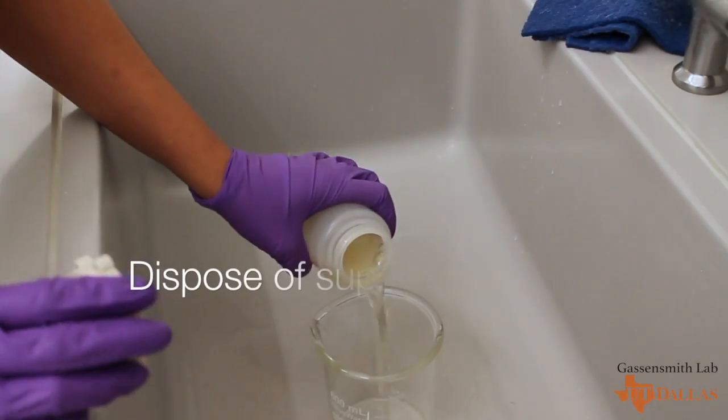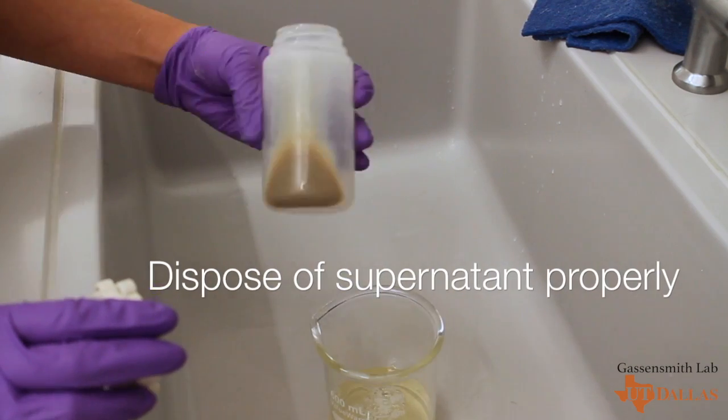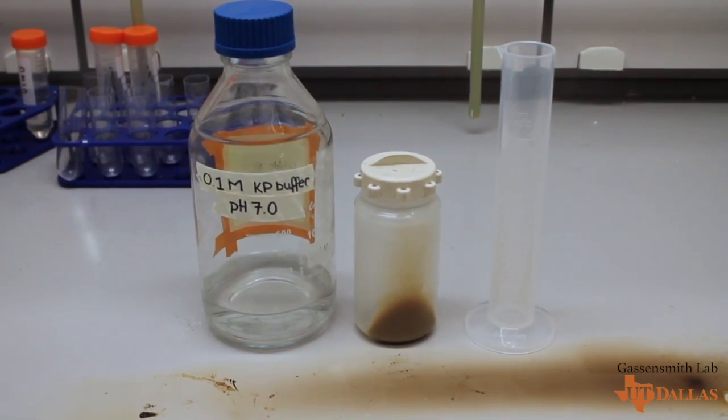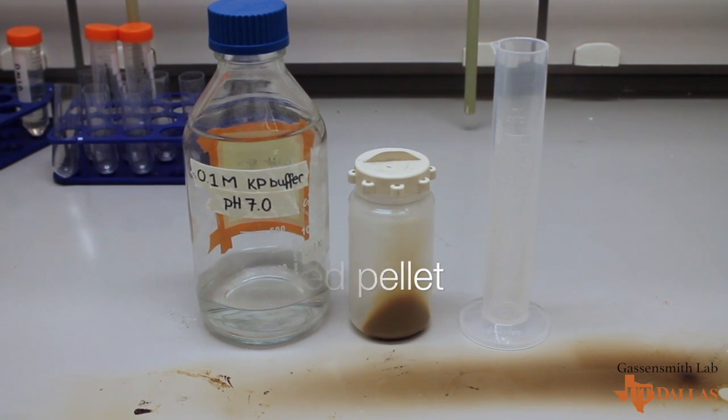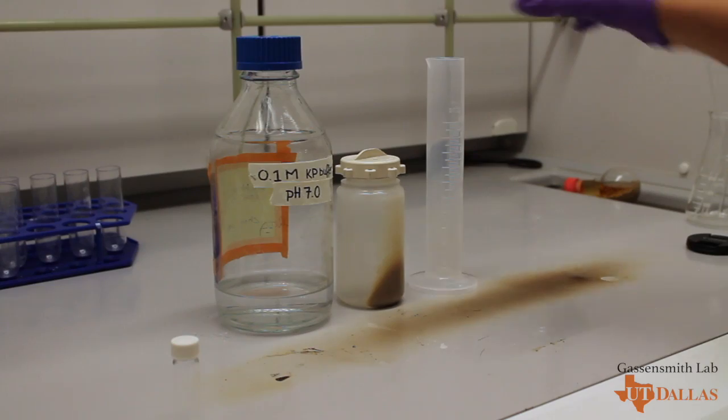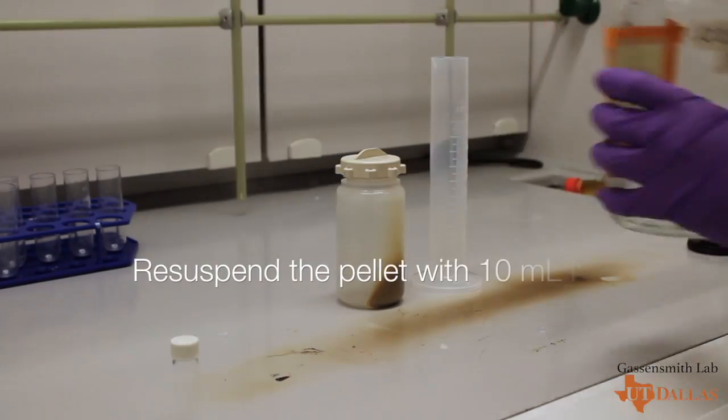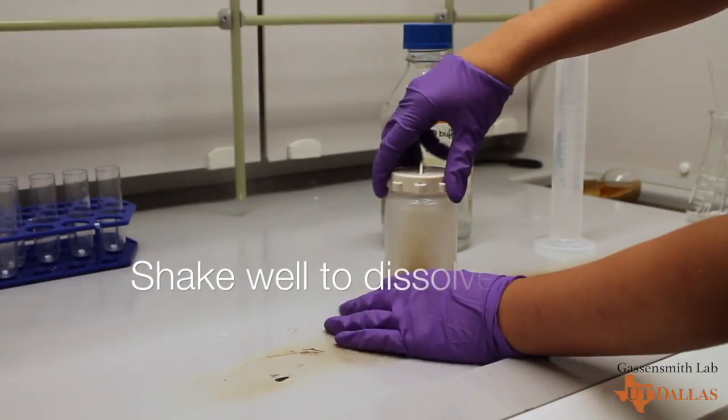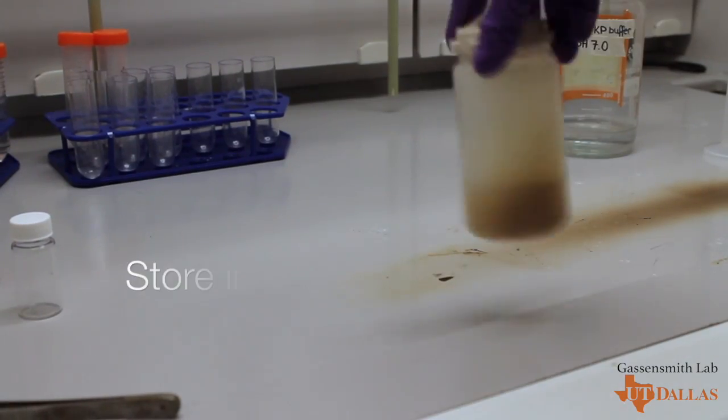Once the centrifuge is done, pour out the supernatant properly. Next, you'll need KP buffer, your pellet, and a graduated cylinder. Resuspend the pellet using approximately 10 milliliters of KP buffer and store it on a shaker in the cold room overnight.